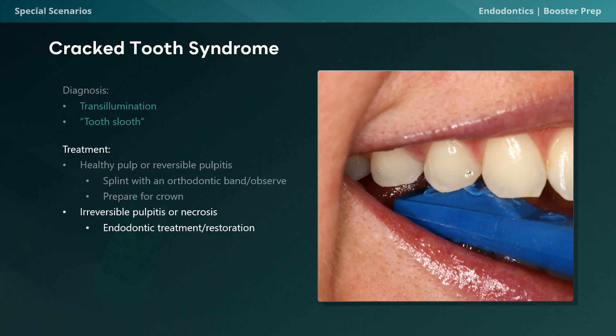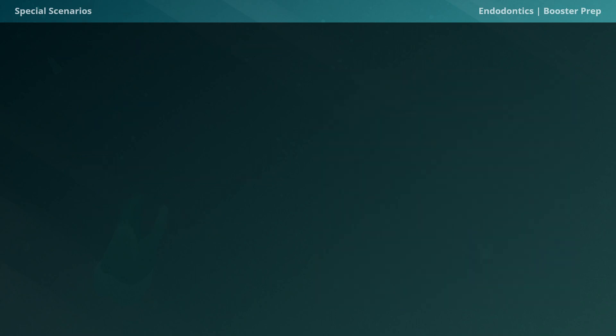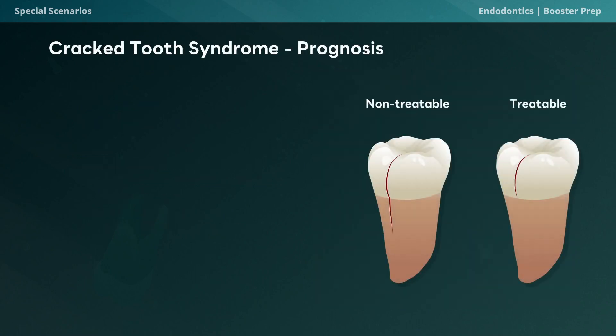We now know how to treat this condition, but what's the prognosis? The prognosis is dependent on three main factors. The first question: is there a mesial or distal probing depth greater than 5 millimeters? This is the worst one. If the answer is yes, we have a poor prognosis every single time.